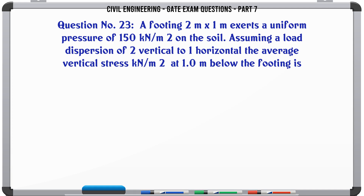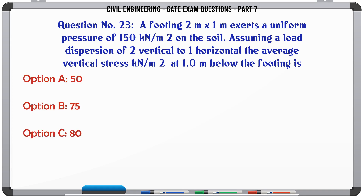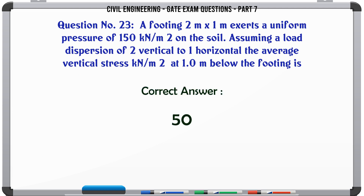A footing 2 m × 1 m exerts a uniform pressure of 150 KN/M2 on the soil. Assuming a load dispersion of 2 vertical to 1 horizontal, the average vertical stress (KN/M2) at 1.0 m below the footing is: A) 50, B) 75, C) 80, D) 100. The correct answer is 50.